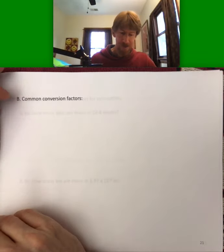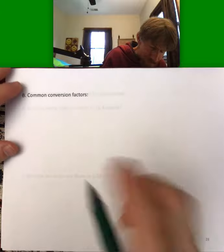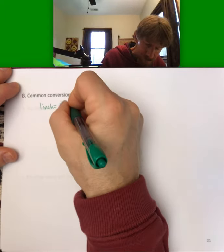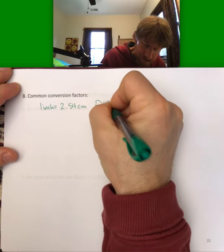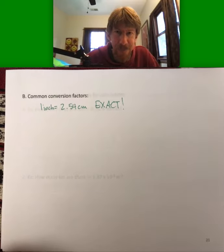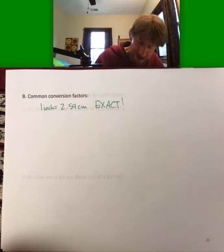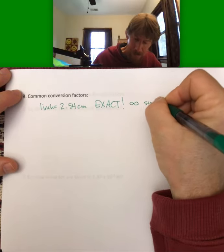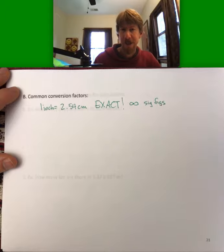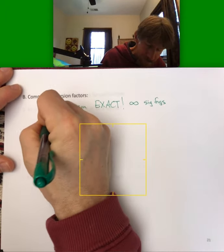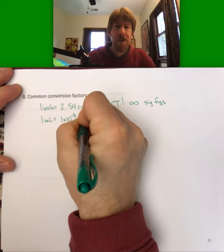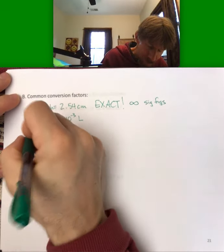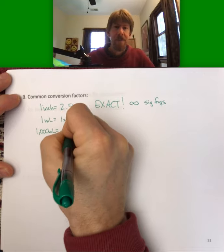Some common conversion factors: one inch equals 2.54 centimeters exactly — meaning infinite significant figures. Another: one milliliter equals 1×10⁻³ liters. Equivalently, 1,000 milliliters equals one liter. Both statements are equivalent.